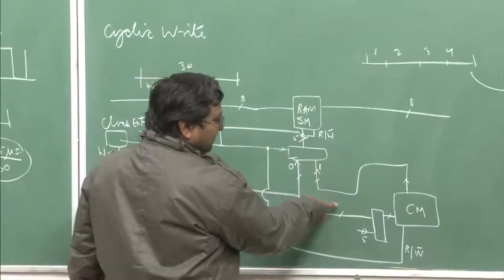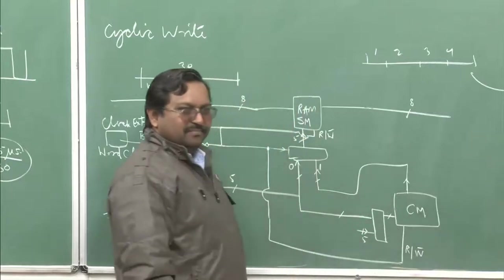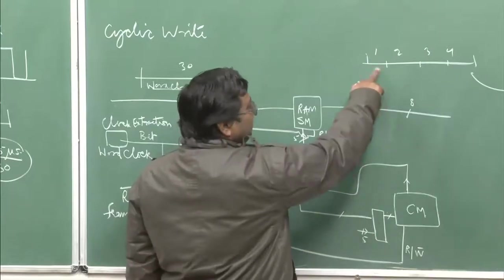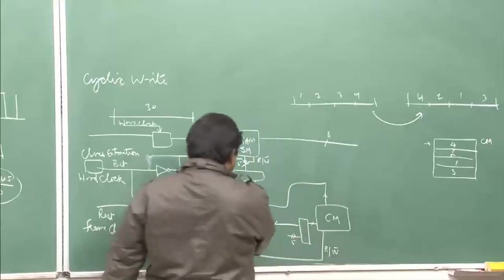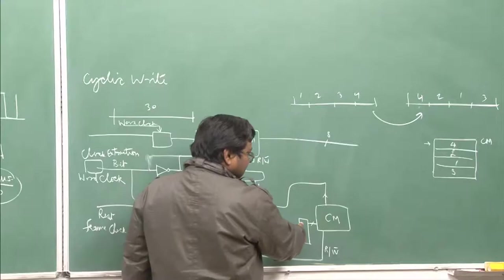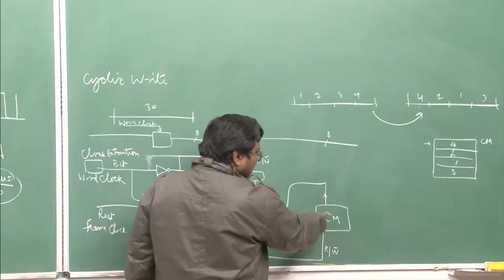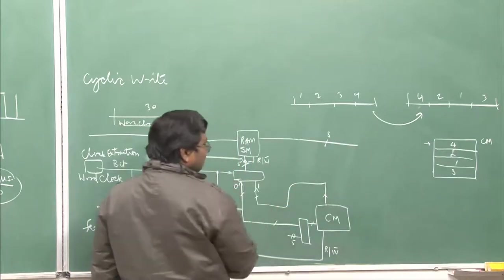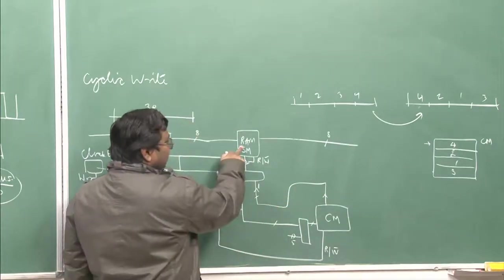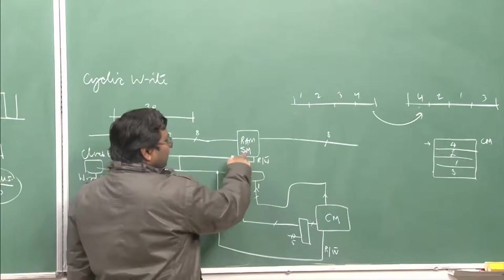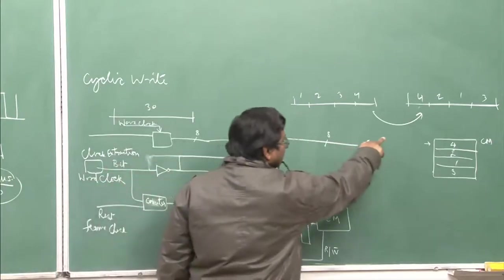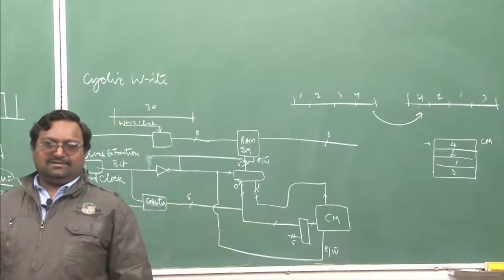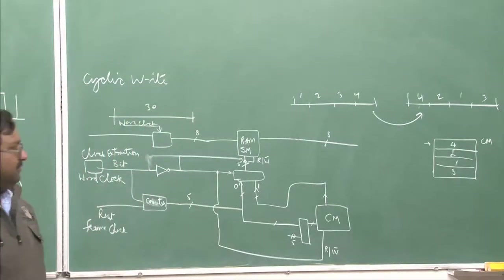When in read mode — when this is 1 — the read address comes from the control memory, whose address comes from the counter. In the first slot, I need to read location 4, so 1 comes from the counter, connects through the mux (read mode), and the value 4 comes out from the control memory. This 4 is fed as the address to the speech memory RAM. Slot 4 is read in the first octet position of the outgoing frame.